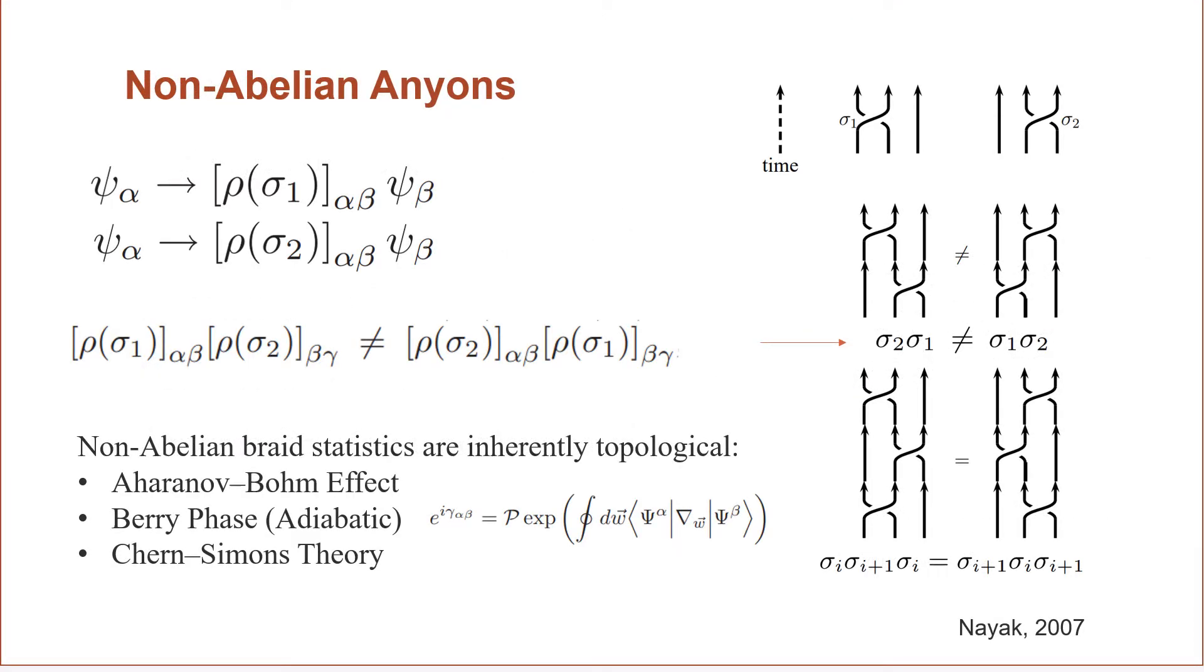As mentioned before, gate operations upon the system will be created using braids, which can be seen in the diagram on the right of the screen. For example, a sigma 1 operation is a unitary operation that rotates particle 1 to the position of particle 2 and particle 2 to the position of particle 1, and this is also the same with sigma 2 except now for particle 2 and 3.